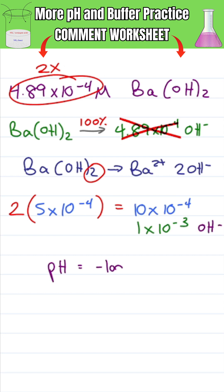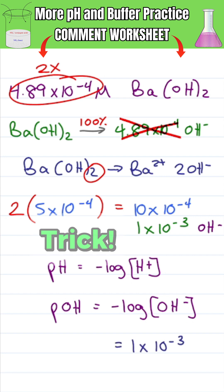If pH is equal to negative log the H plus concentration, pOH is negative log the OH minus concentration, which is negative log 1 times 10 to the minus 3. Now here's the trick.